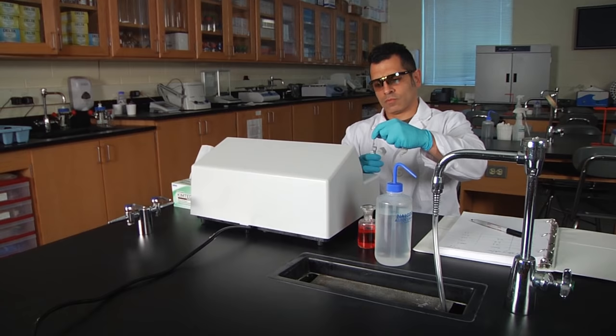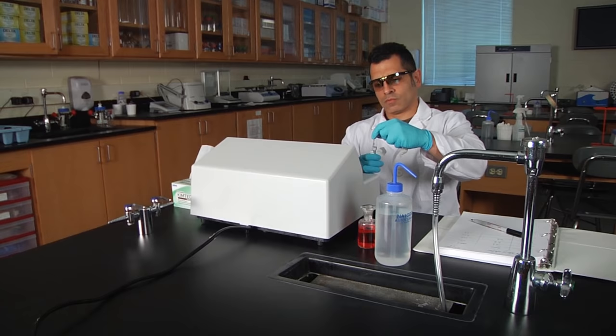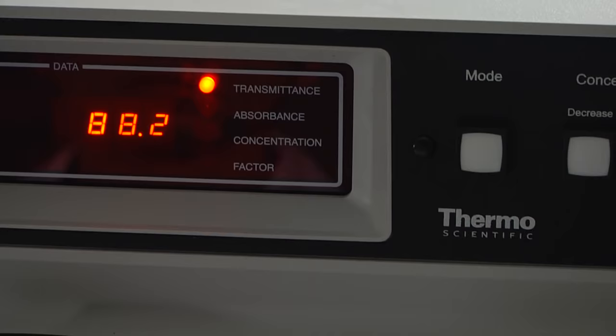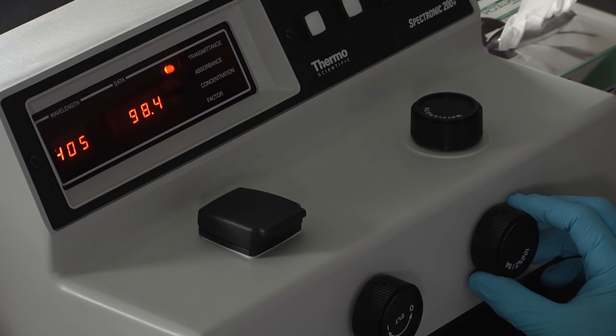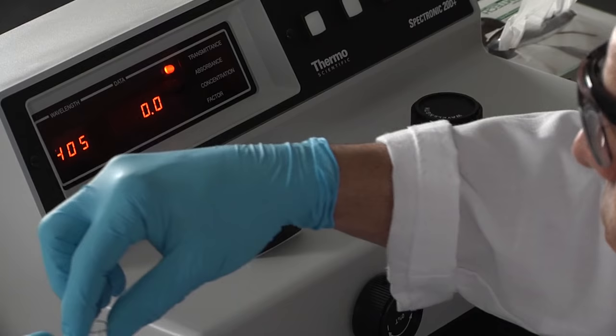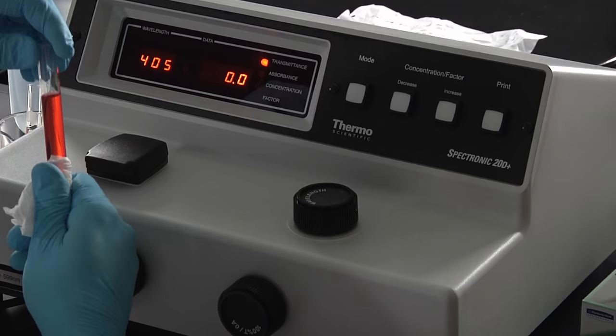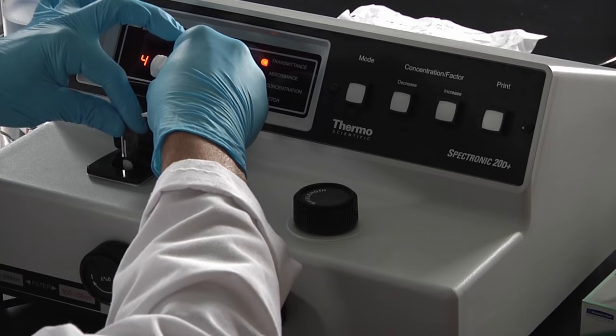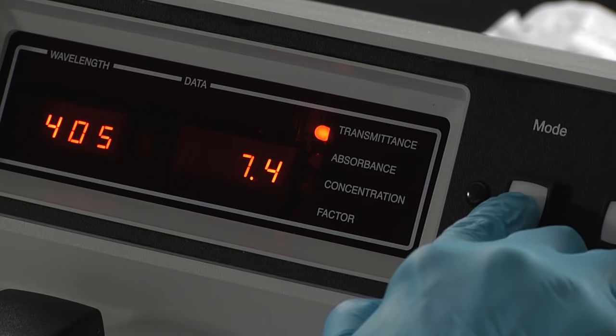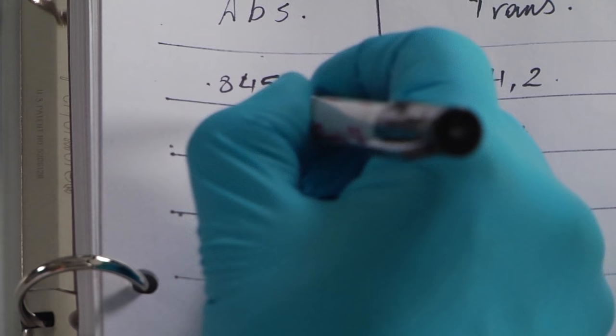Wipe the blank cuvette again and place it in the sample chamber. Adjust the transmittance control knob until it displays 100%. Now remove the blank. Wipe the sample cuvette and place it in the sample chamber. The transmittance for the sample at 405 nanometers is 7.4%. The absorbance for the sample is 1.130. Record this in your lab notebook.